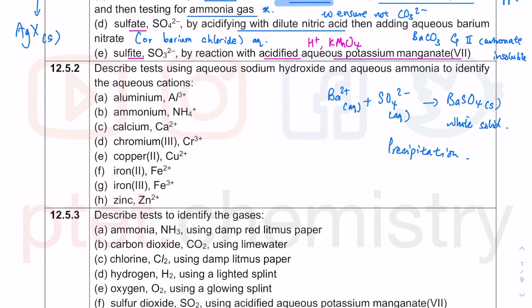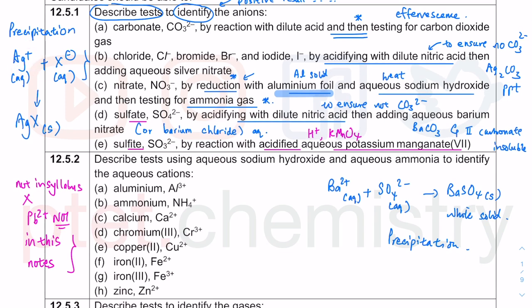These are the cations you must master. Note: lead(II) Pb²⁺ is not in the current syllabus — cross it out if it appears in your PDF notes. Just so you know, Pb²⁺ behaves like Ag⁺: silver chloride is white, silver bromide is cream, silver iodide is yellow. Similarly, lead(II) chloride PbCl₂ is white, PbBr₂ is cream, and PbI₂ is yellow.